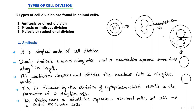This kind of division is called amitotic division. First the nucleus elongates, a constriction appears along its length, the constriction deepens and divides the nucleus into two daughter nuclei, followed by division of the cytoplasm, resulting in the formation of two daughter cells. This division occurs in unicellular organisms, abnormal cells, old cells, and also in fetal membrane cells.